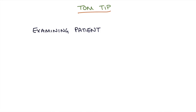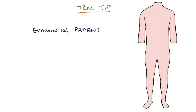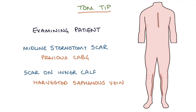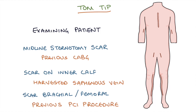A Tom tip: when examining a patient you think might have coronary artery disease, always check their chest for a midline sternotomy scar indicating a previous CABG, and check for scars along their inner calves where the saphenous vein may have been harvested. Also check for scars on the brachial and femoral arteries in the antecubital fossa and groin, which might indicate a previous PCI — this will impress your examiners and give you a good clue about the patient's history.